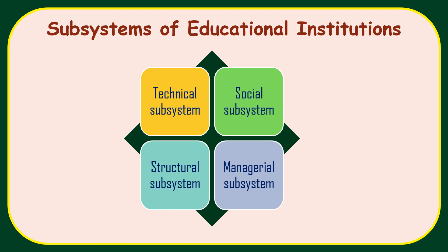And the last one is managerial subsystem. As the name suggests, proper management hota hai. Toh yahan management ke sare objectives, saari cheezein — planning, organizing, staffing, controlling, directing, effective coordination, teamwork — yeh saari cheezein aa jaati hai so that the complete system works properly for the better output. Toh yahan feedback system bhi hota hai, corrective measures bhi liye jaate hai.